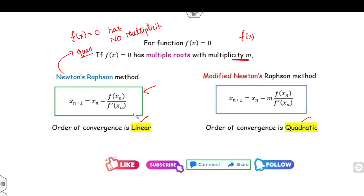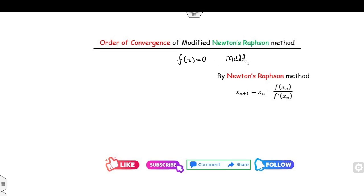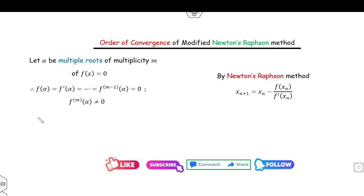In this lecture we will see the proof of these two results in a very simple way. First, for the modified Newton's method, our target is to apply the formula to f(x) = 0 having some multiplicity. I assume that alpha is the multiple root with multiplicity m, meaning the m-th derivative at the point alpha is non-zero, while for all previous values — f(alpha) = 0, f'(alpha) = 0, up to f^(m-1)(alpha) = 0.